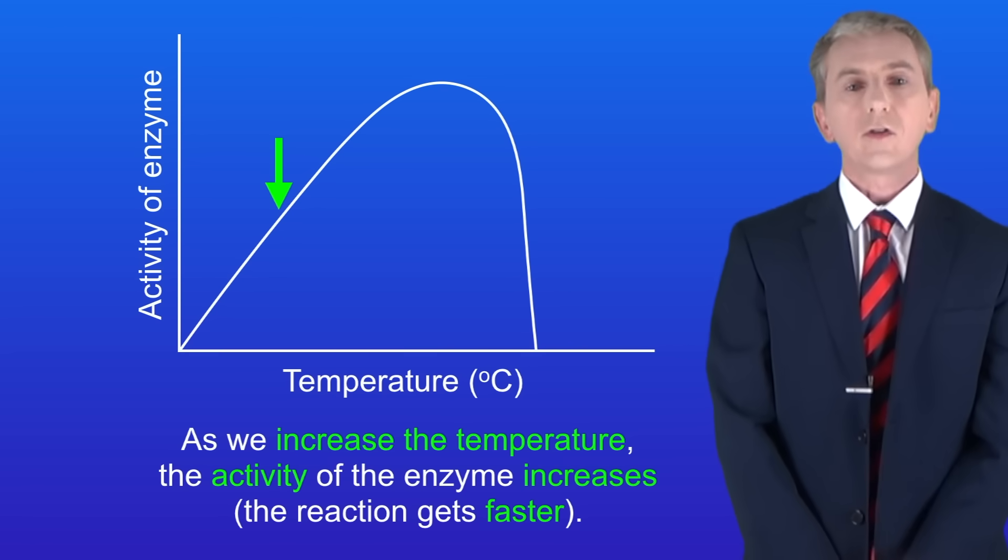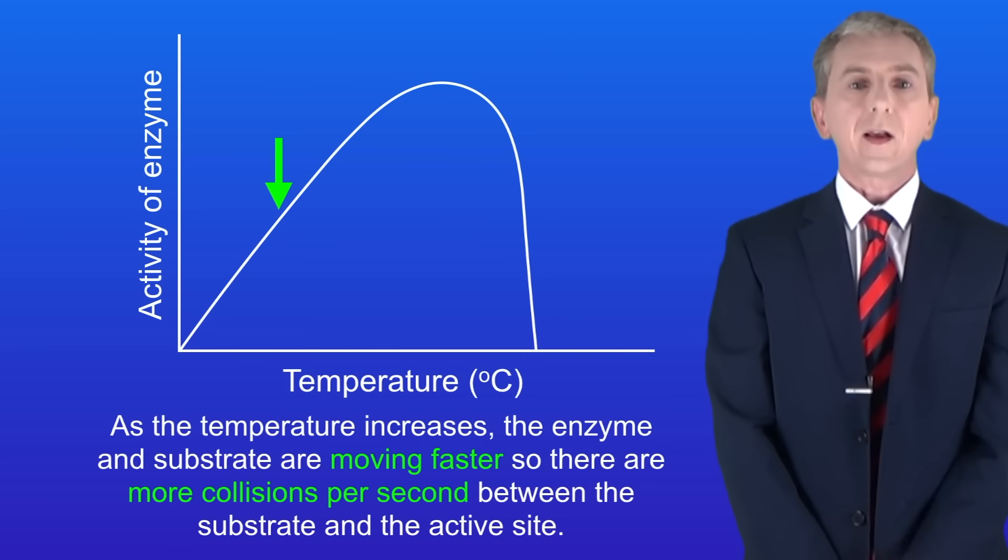As you can see, as we increase the temperature the activity of the enzyme increases, in other words the reaction gets faster. That's because as the temperature increases the enzyme and the substrate are moving faster. That means there are more collisions per second between the substrate and the active site.